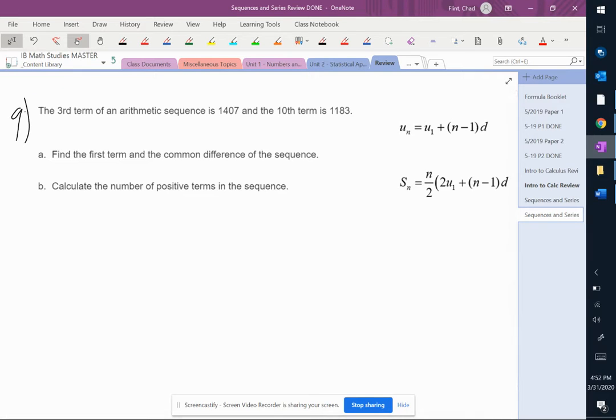All right, so the third term is 1407 and the 10th term is 1183. So we got to be a little inventive here.